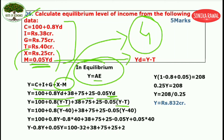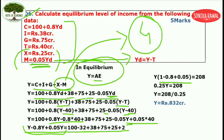Open the brackets carefully. Note that the minus sign in the import term will turn the negative product to positive — this is another common mistake. Bring all Y terms to the left side, take Y common: 1 minus 0.8 plus 0.05 gives 0.25. The right side equals 208 and the final answer comes out to be Y equal to 832 crores.